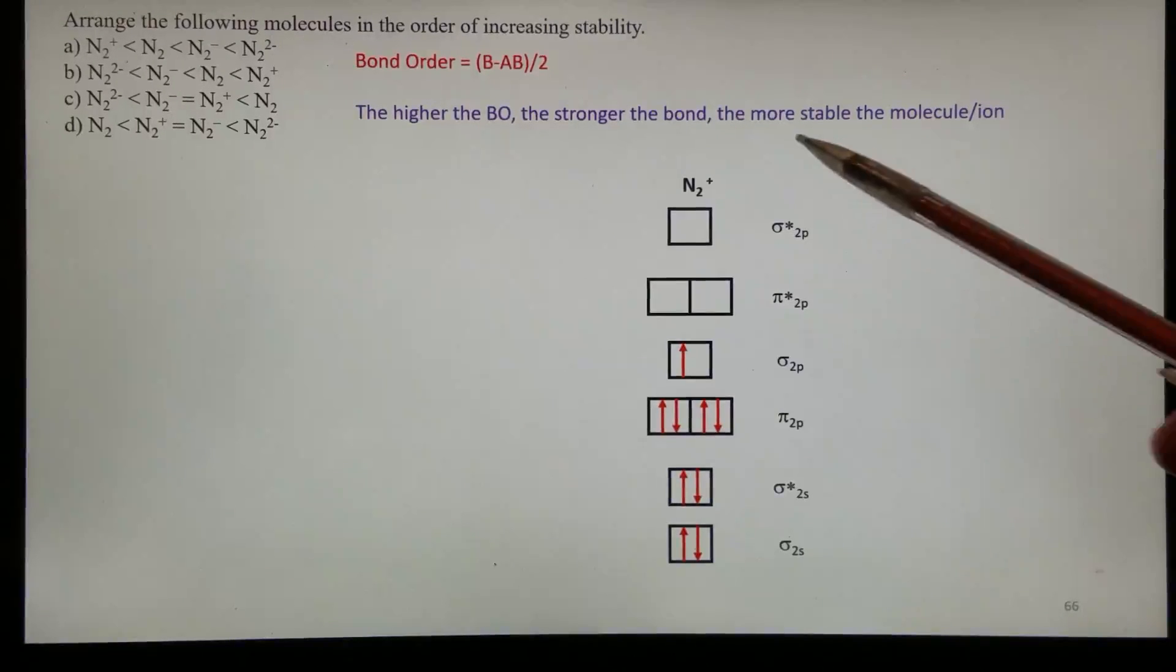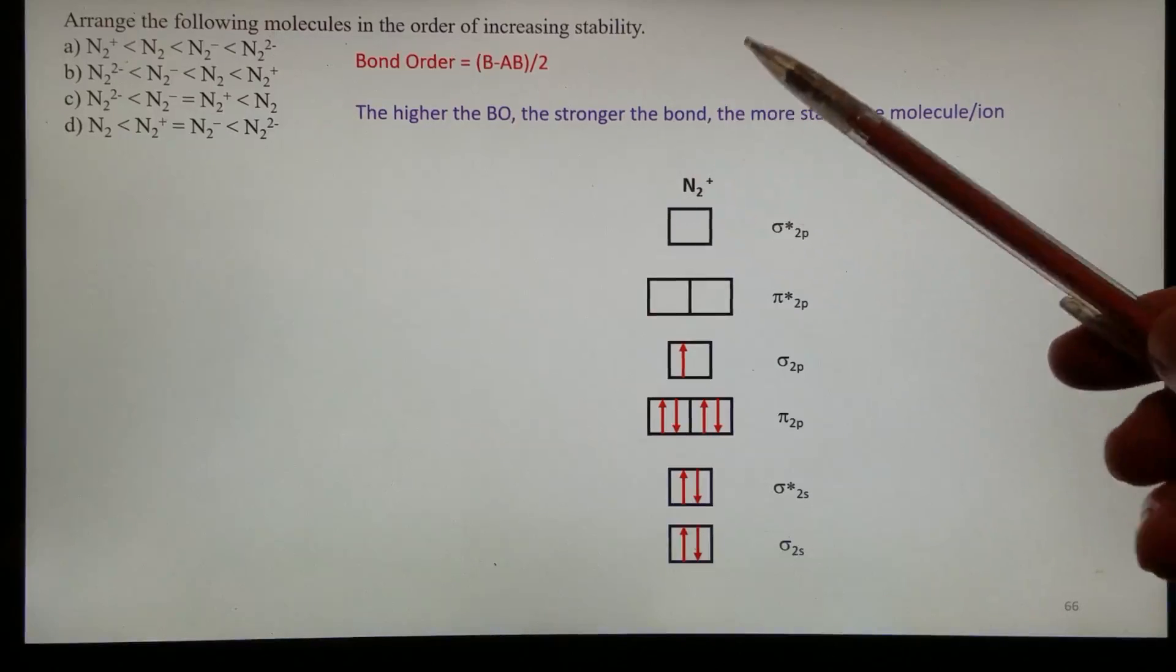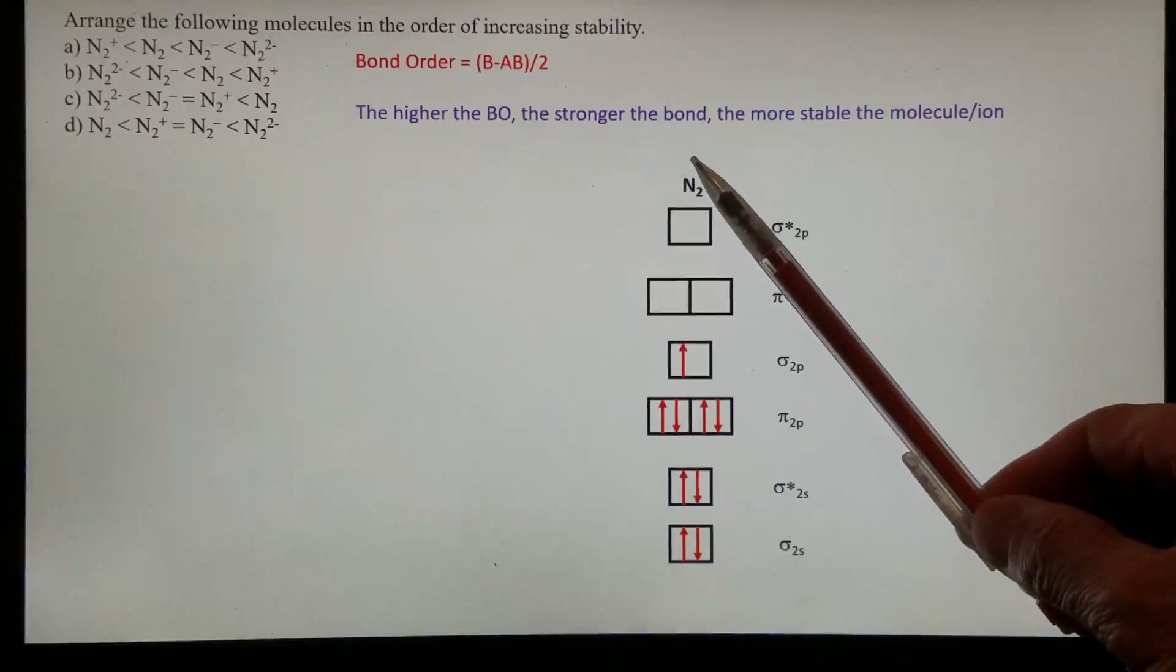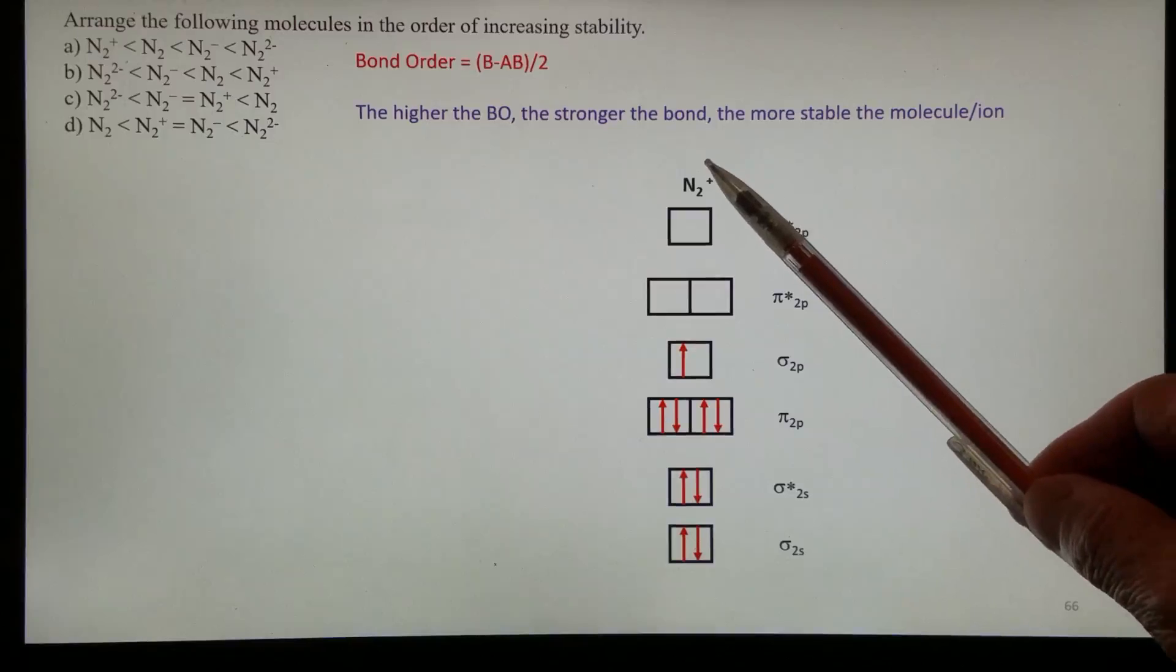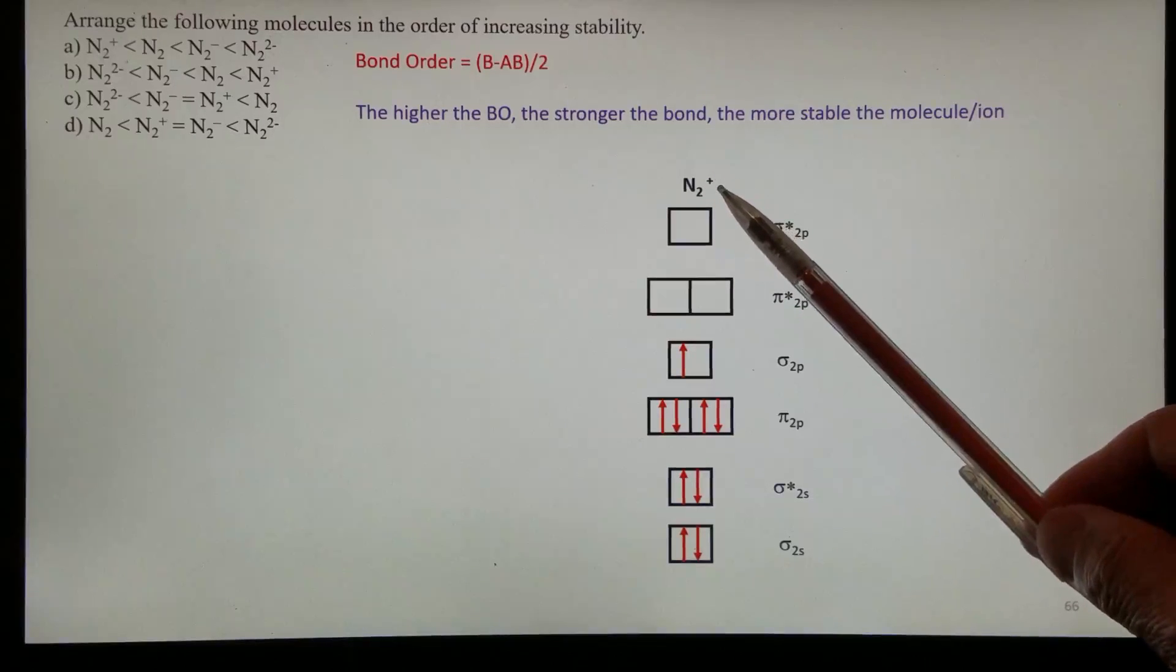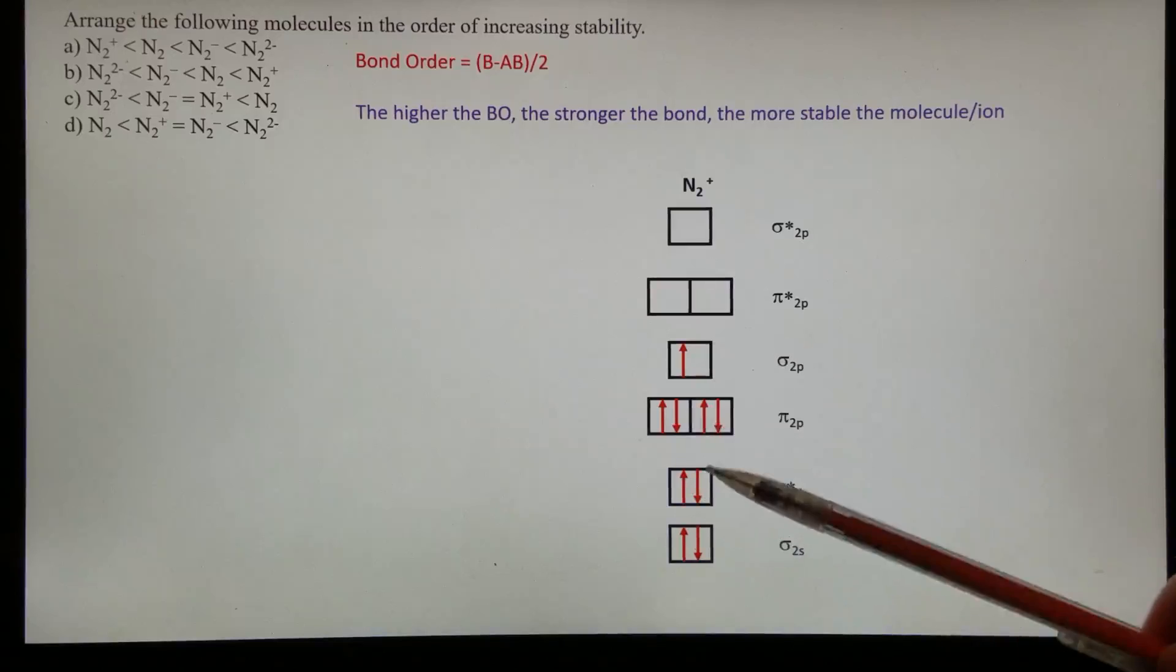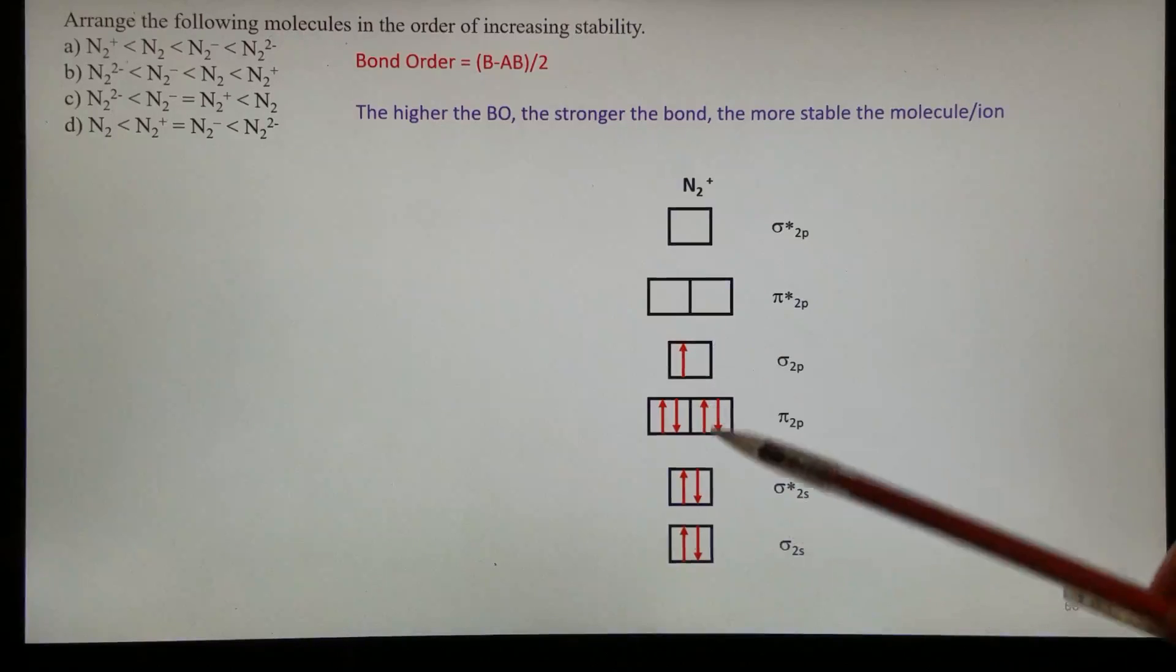So first let's work on N2 plus this ion first. We know each nitrogen atom has five electrons, valence electrons, and then N2 that should give us 10. Lose one becoming N2 plus, then there should be still nine left, and those are the nine electrons occupying different energy levels.